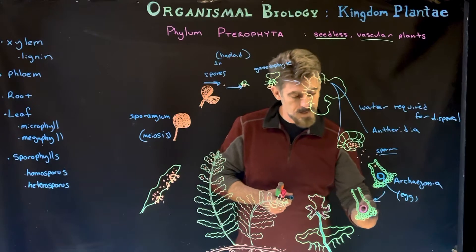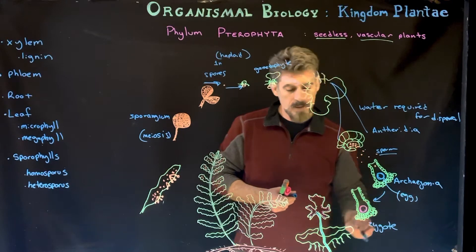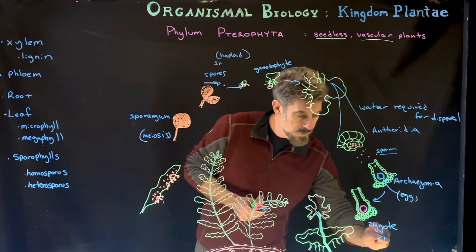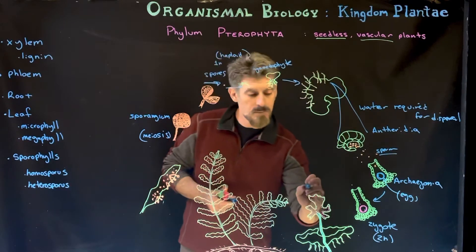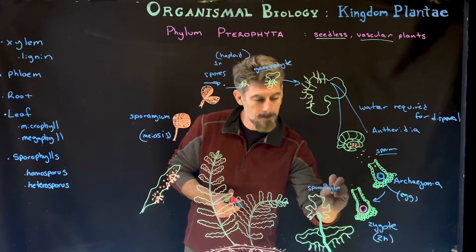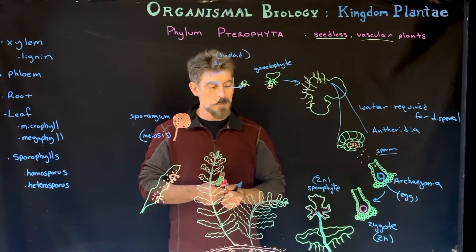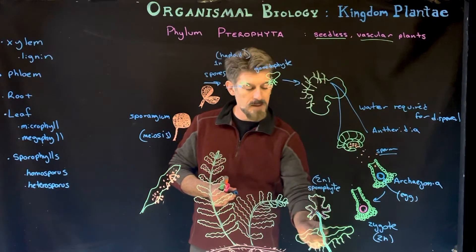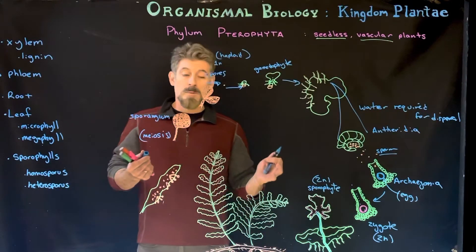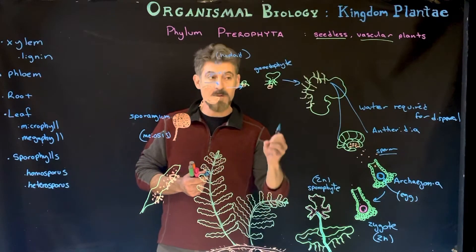Then we get the fertilized egg developing into a zygote, and the zygote is going to start to develop. This is going to be 2n — it's a fusion of gametes — and we're going to start to grow our sporophyte plant, growing up out of the archegonium. This is representing the gametophyte down here, and this is the sporophyte growing out of it.